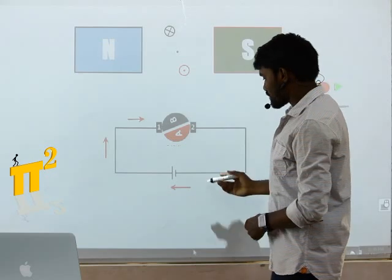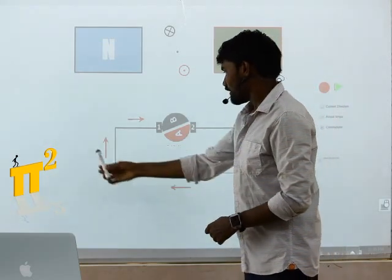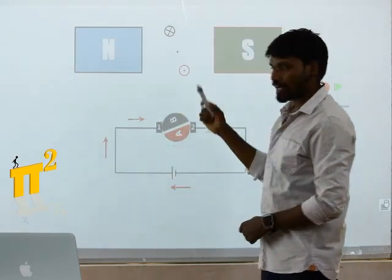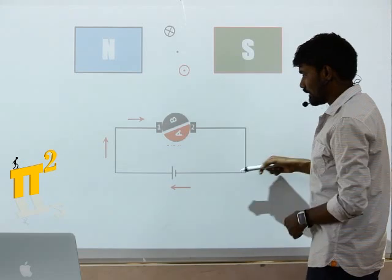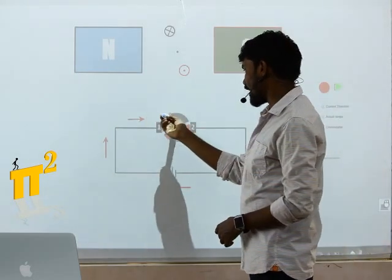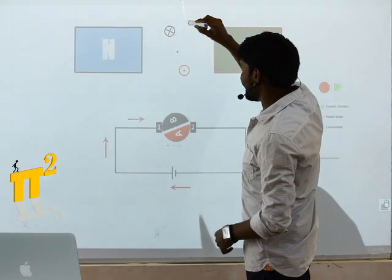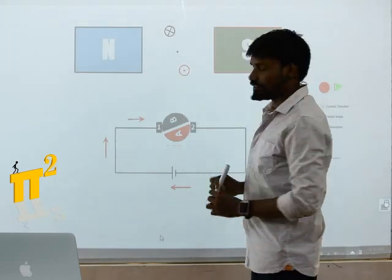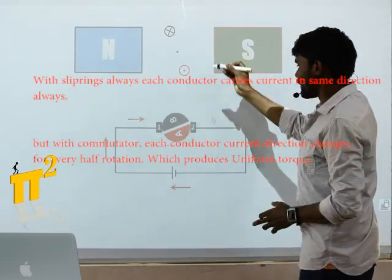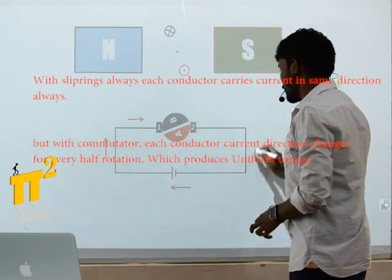This commutator is reversing the current directions. Now current is entering into the black part. This black part is connected to the black conductor, so current is entering into the black conductor and returning from the red conductor through brush two.